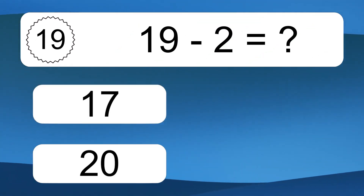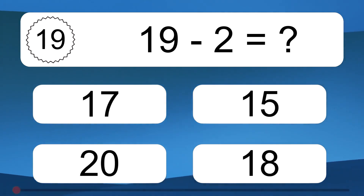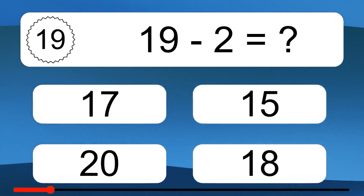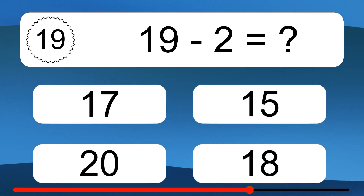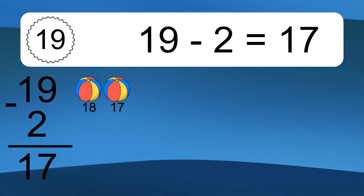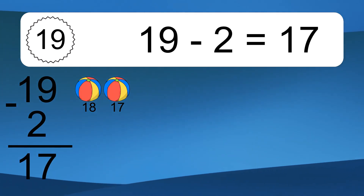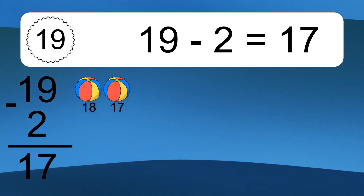19 minus 2 equals what? 19 minus 2 equals 17. Let's count it. 18, 17.